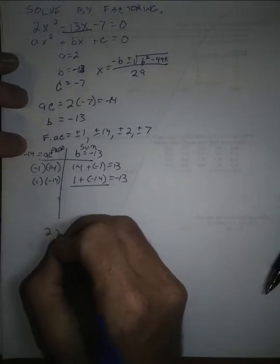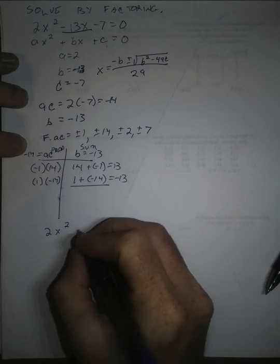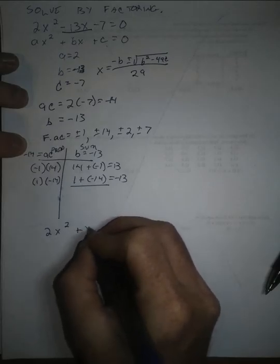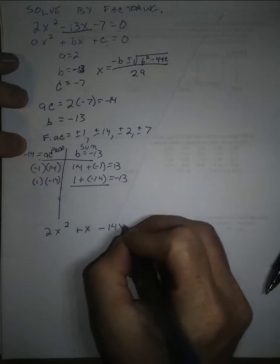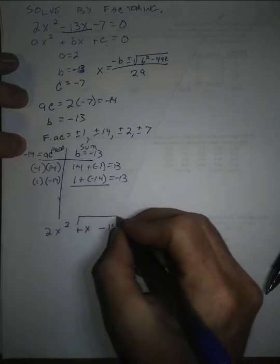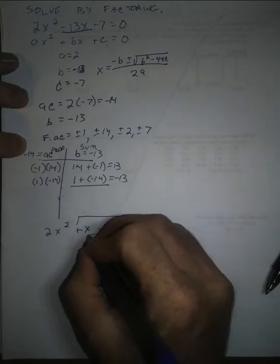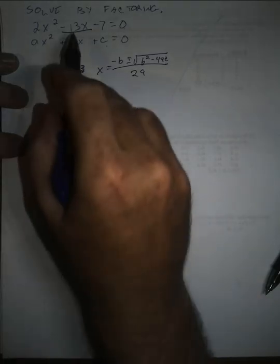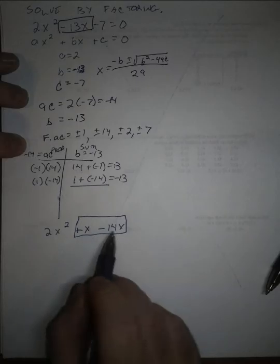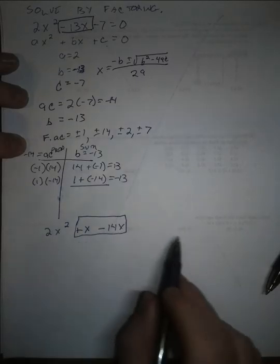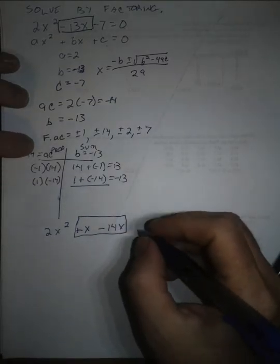We're going to rewrite 2x squared plus x minus 14x. Notice that this thing right here in the middle is the same as minus 13x. We've just rewritten it in a fancy way so that we can now have four terms to factor by grouping.